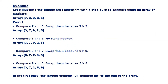Let us see the example. Assume array = [7, 3, 9, 2, 5]. In pass number 1: compare 7 and 3 — swap them because 7 is greater than 3. Array becomes [3, 7, 9, 2, 5]. Compare 7 and 9 — no swap needed. Compare 9 and 2 — swap them because 9 is greater than 2. Array becomes [3, 7, 2, 9, 5]. Compare 9 and 5 — swap them because 9 is greater than 5. Array becomes [3, 7, 2, 5, 9]. After the first pass, the largest element 9 bubbles up to the end. It is in the correct position.